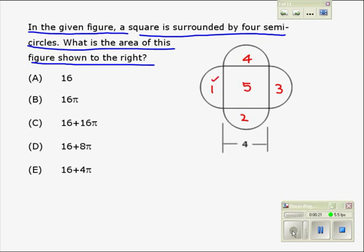While parts one, two, three, and four are semicircles, part five is a square. We also see that the dimensions of this square is four.